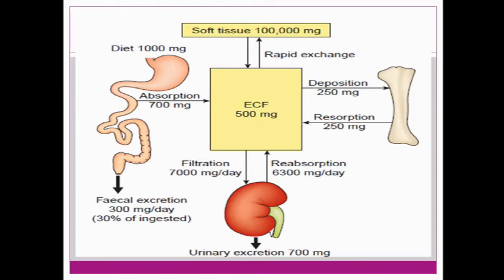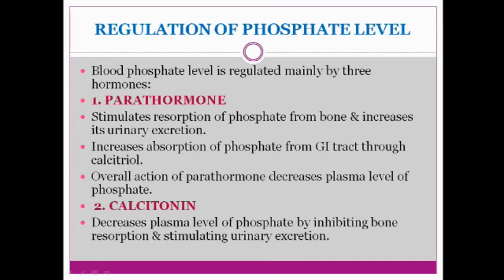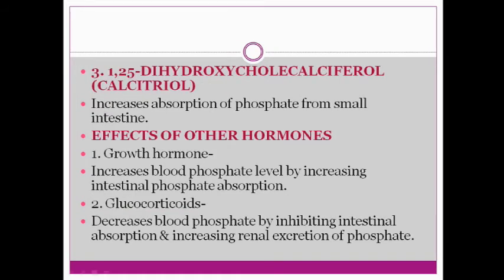Regulation of phosphorus is by three hormones. First, parathormone: it stimulates reabsorption of phosphate from bone and increases its excretion through urine. Calcitonin increases absorption of phosphate from the GI tract. Action of parathormone will decrease the plasma level of phosphate by inhibiting bone reabsorption and stimulating urinary excretion. Calcitonin increases absorption of phosphate from the small intestine. Growth hormone increases blood phosphate level and glucocorticoids decrease blood phosphate level by inhibiting intestinal absorption.